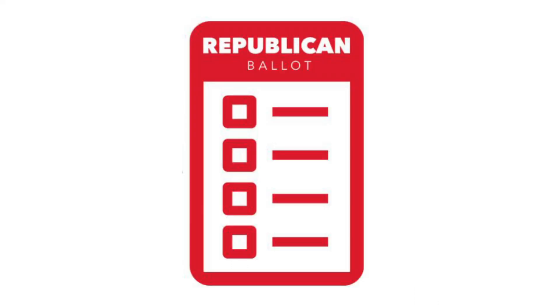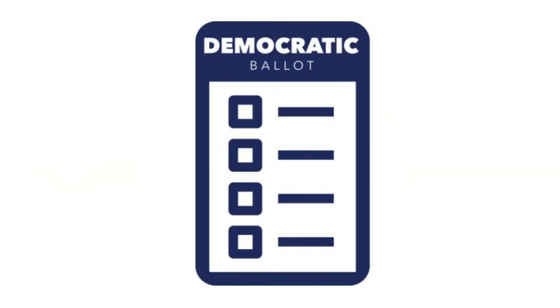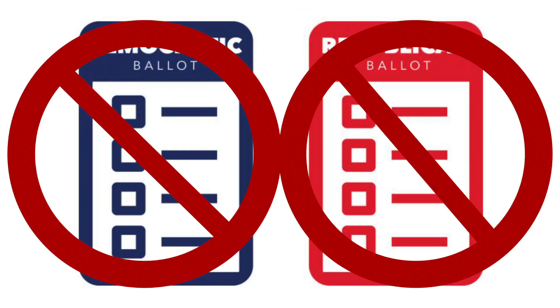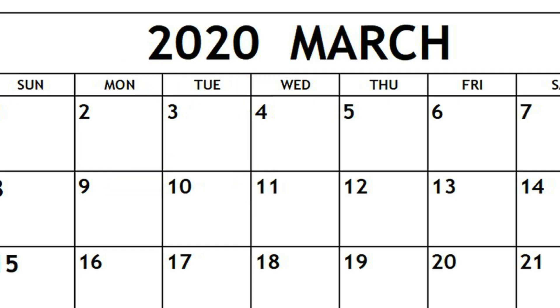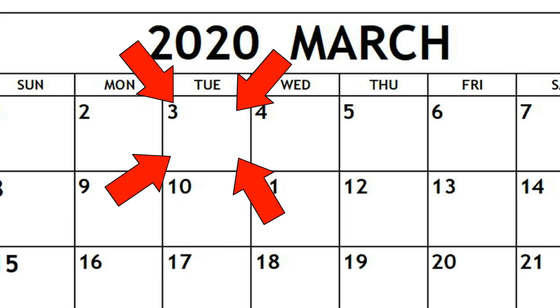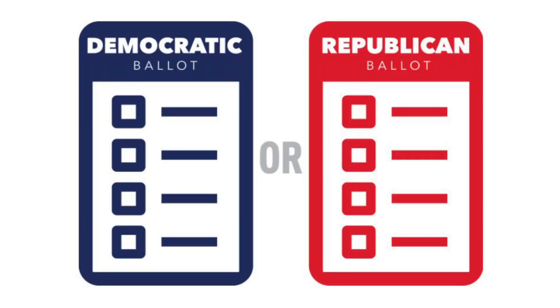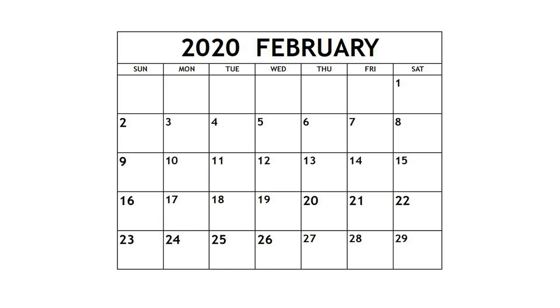If a voter refuses to select a party, they will not be able to vote. This year's presidential primary will occur on March 3rd. Absentee voting is currently available, and early voting will begin on February 25th.